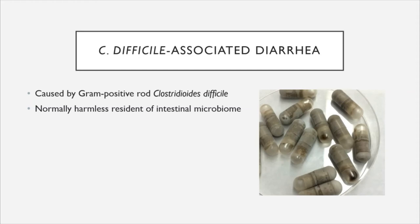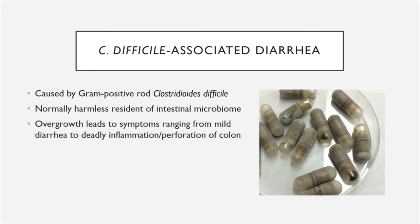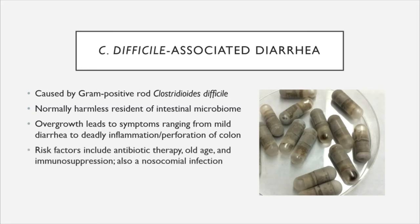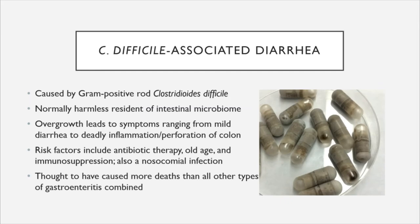Next, we have C. difficile associated diarrhea, also known as C. diff. It's caused by a gram-positive rod called Clostridioides difficile, formerly known as Clostridium difficile. This organism is normally a harmless resident of the intestinal microbiome, but overgrowth can lead to symptoms ranging from mild diarrhea to deadly inflammation and perforation of the colon. Risk factors include broad-spectrum antibiotic therapy, old age, and immunosuppression. It is also a nosocomial infection and is thought to have caused more deaths than all other types of gastroenteritis combined.